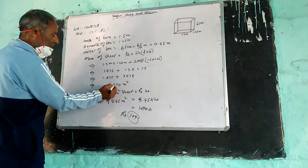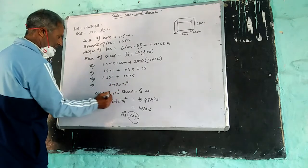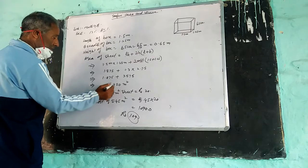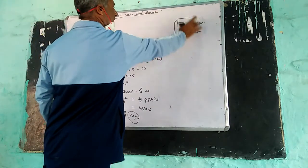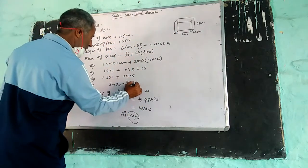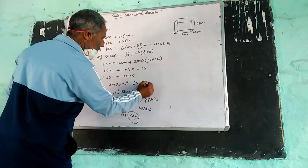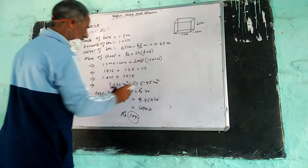Which is equal to 5.45 meters square. So the sheet required for making this box is equal to 5.45 meters square.